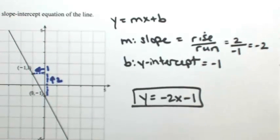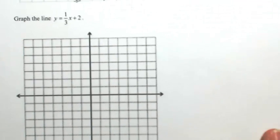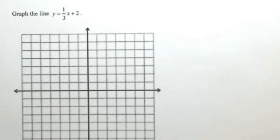Let's go the other way. Let's say you're given the equation and we want to find what the graph looks like. So let's graph the line y equals one-third x plus two.